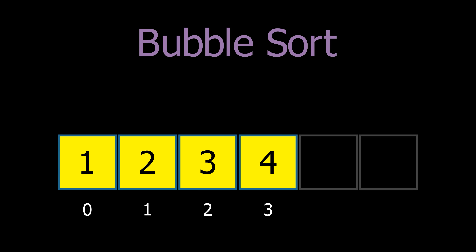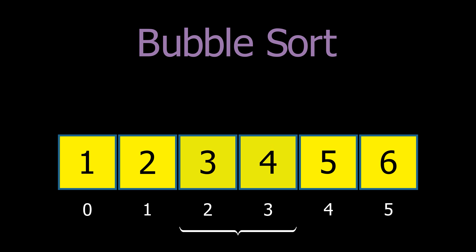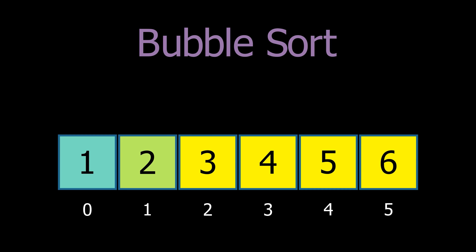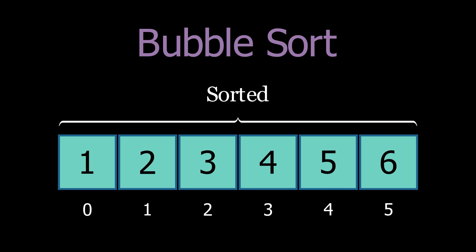Now, imagine if the list is already sorted. In this case, the algorithm will simply traverse the list once, comparing adjacent elements. Since all elements are already in the correct order, no swapping will occur. Bubble sort is optimized to stop early in such scenarios, as it can detect when the list is sorted and terminate, making it more efficient in this particular case.